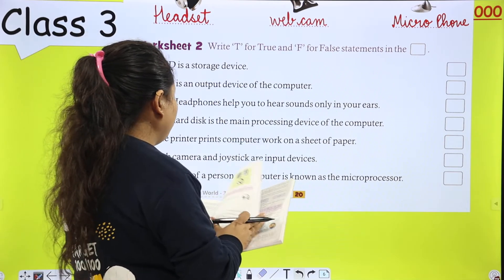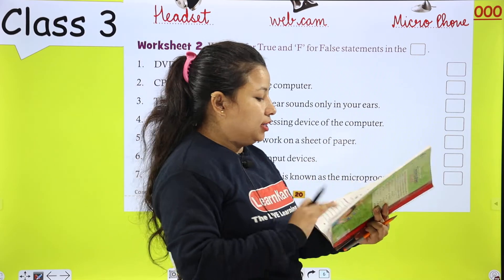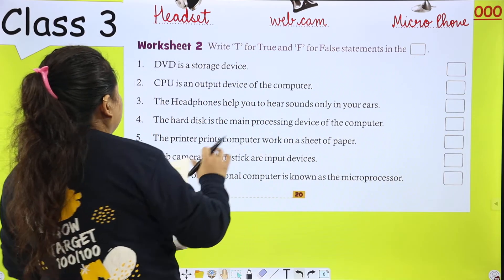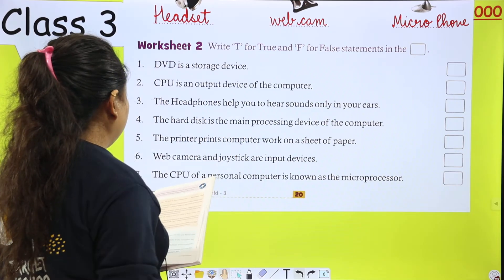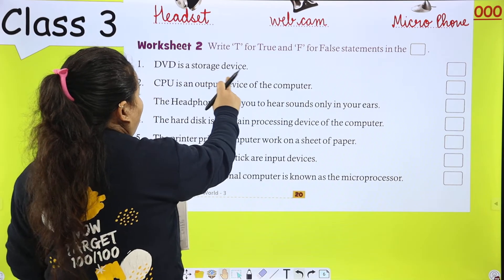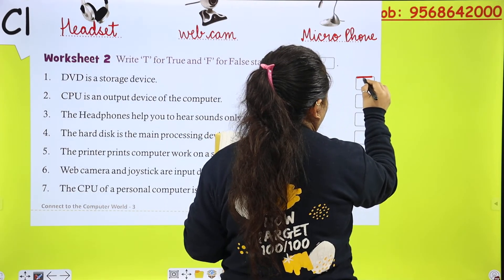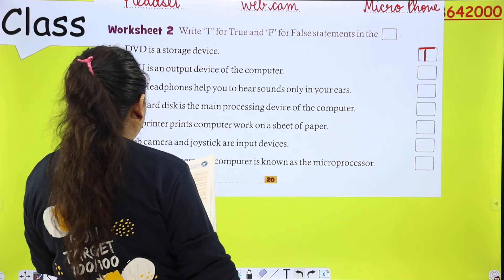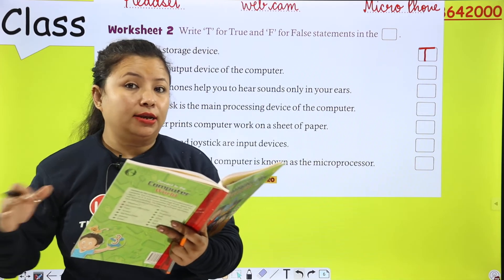Next is worksheet number 2: write T for true and F for false statements in the box. First: DVD — the full form of DVD is digital versatile disc. Is it a storage device? Yes. It is a storage device and it looks similar to a CD but can store much more data than a CD.